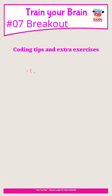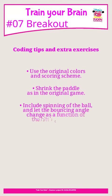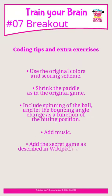Coding tips and extra exercises. Use the original colors and scoring scheme. Shrink the paddle as in the original game. Include spinning of the ball. Let the bouncing angle change as a function of the hitting position. Add music. Add the secret game as described in the Wikipedia article.